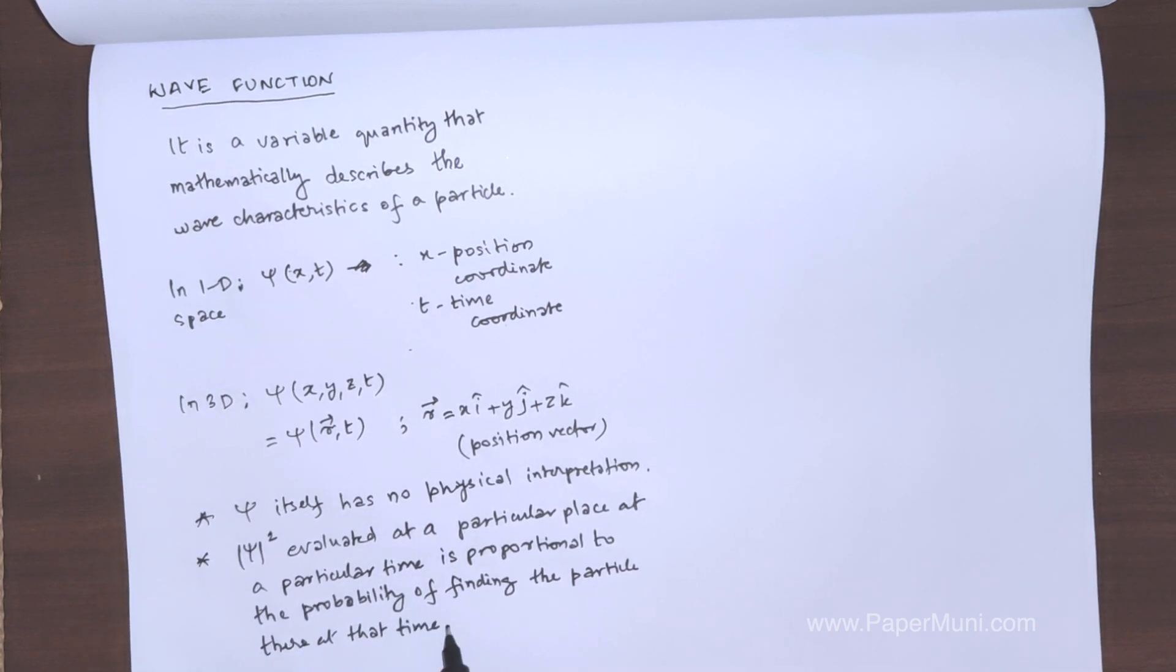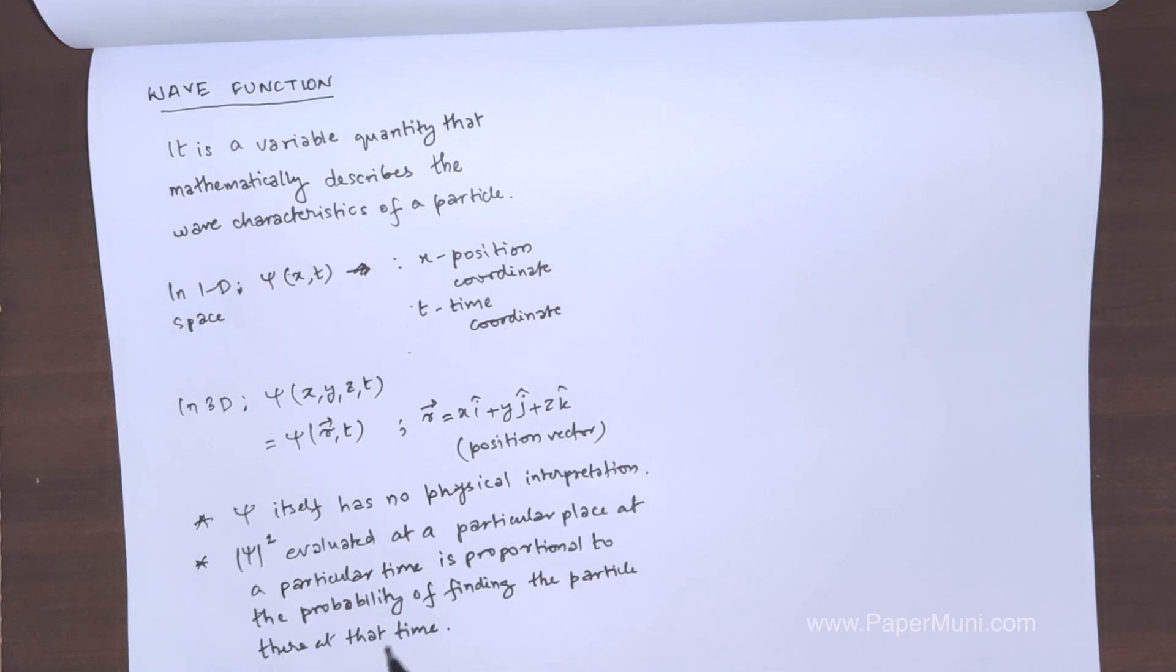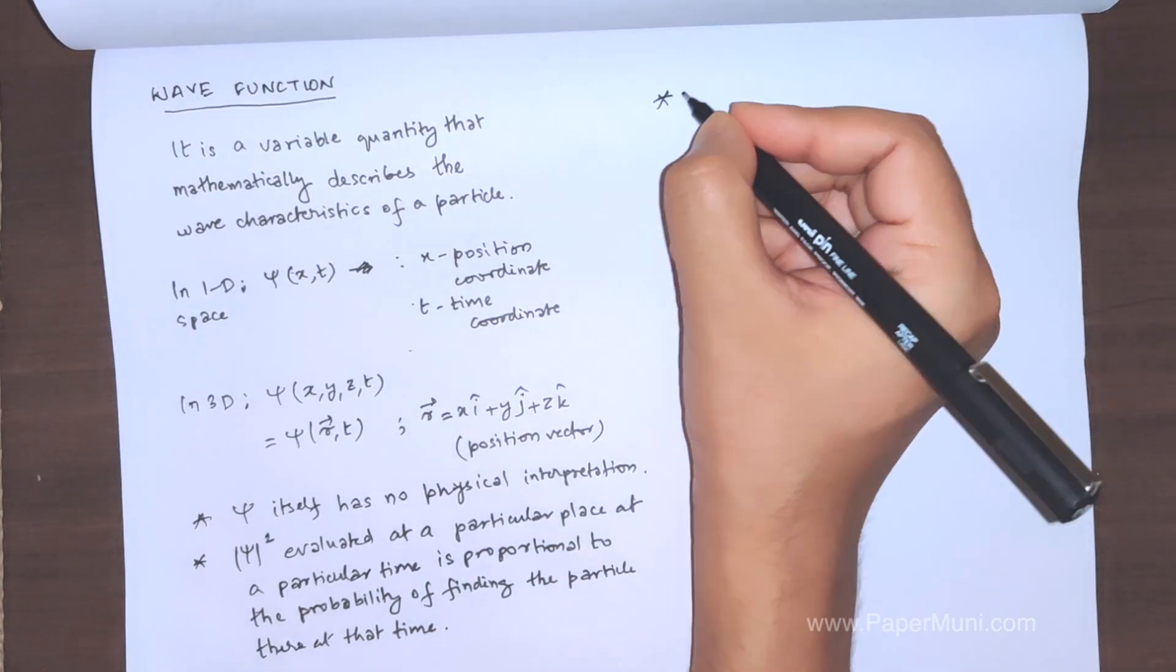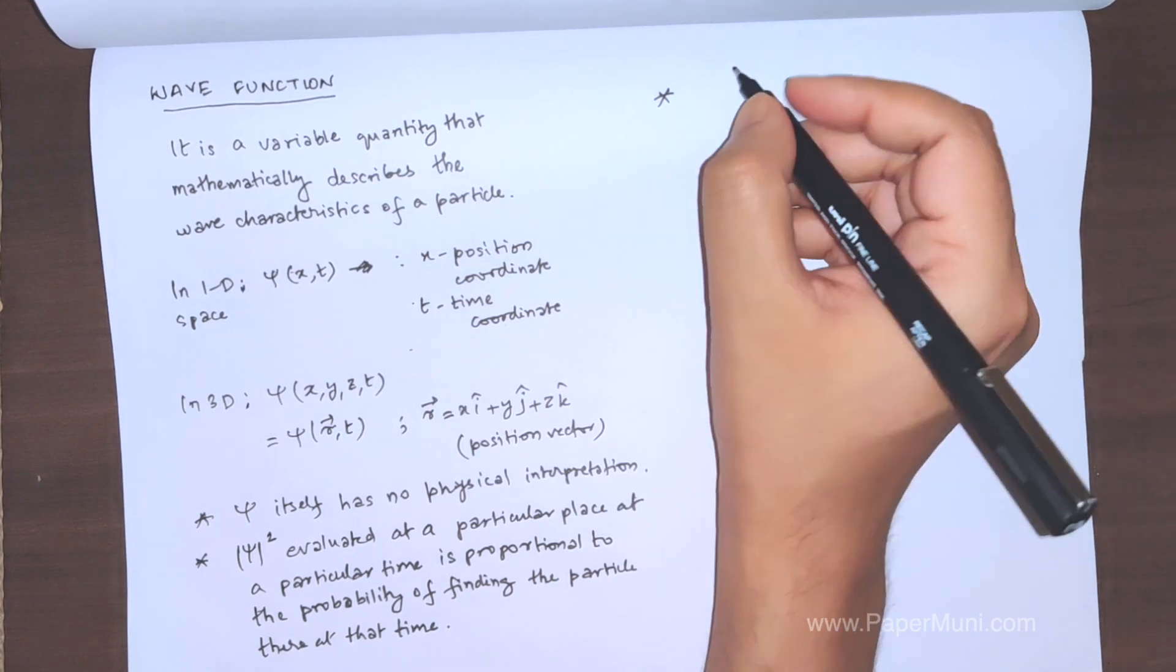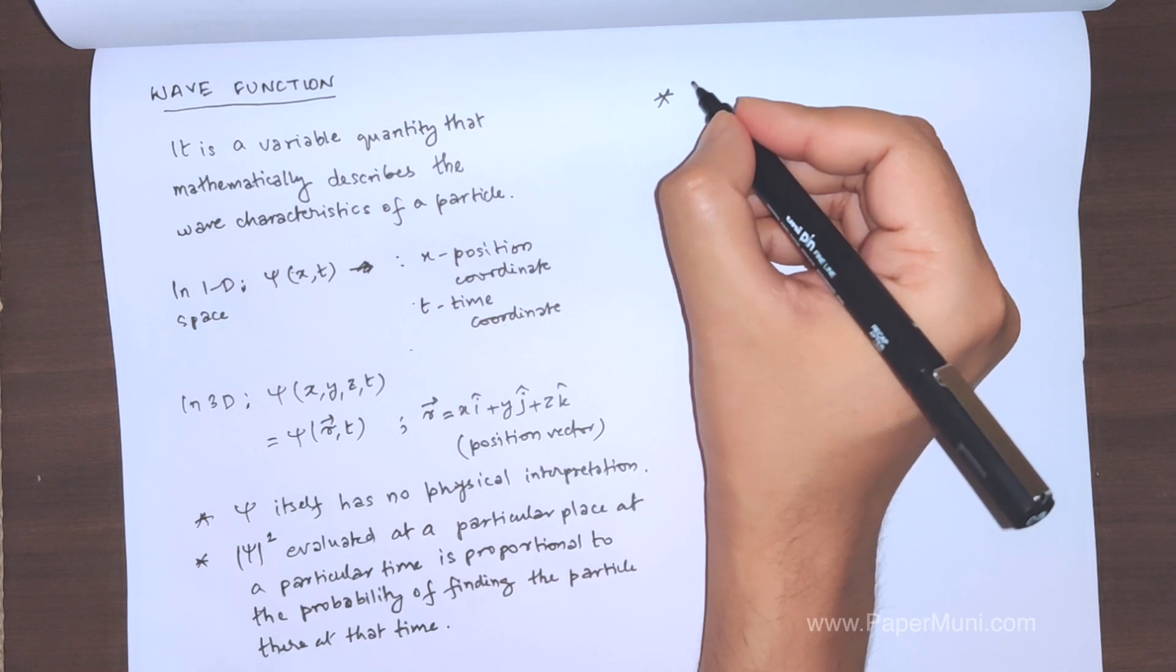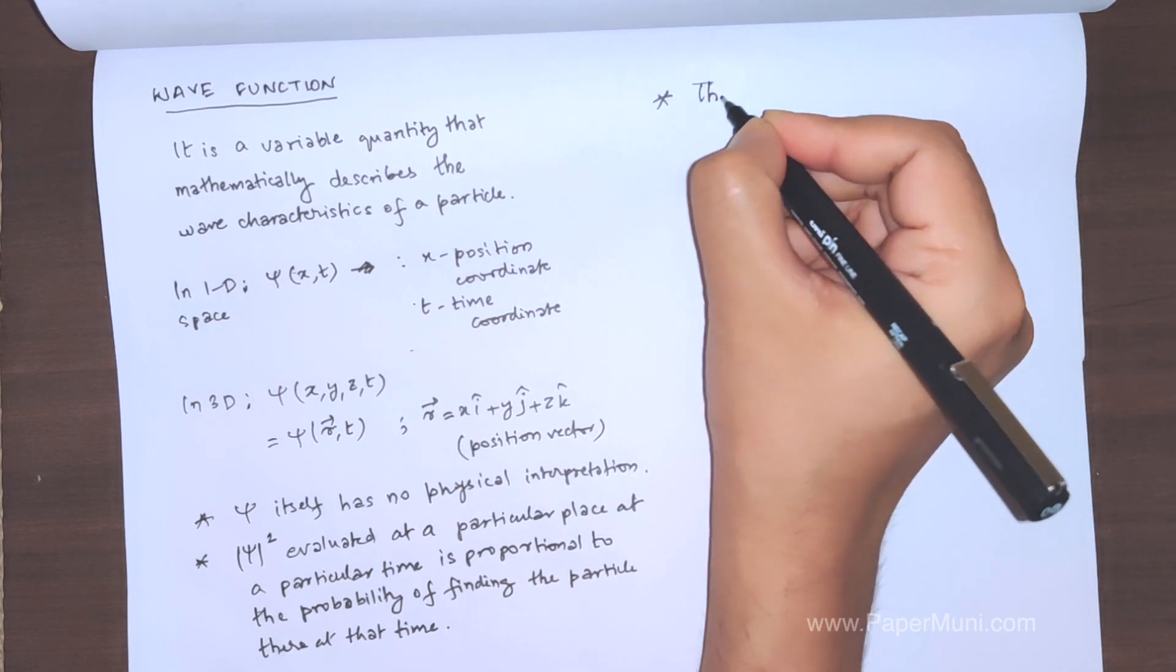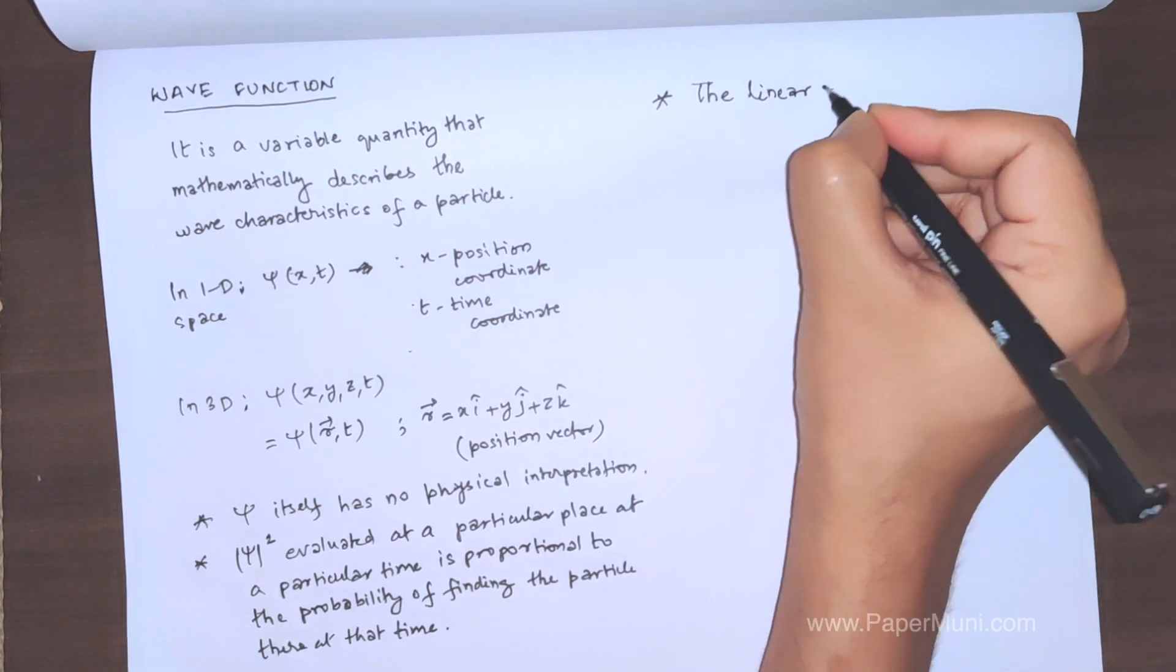So this was the interpretation given by Max Born. And we'll follow this thing. From this wave function, although wave function does not have a physical interpretation, we can find a lot of things. We can measure a lot of quantities which are relevant, like we can measure the linear momentum of the particle.